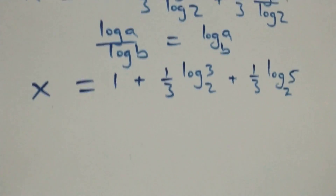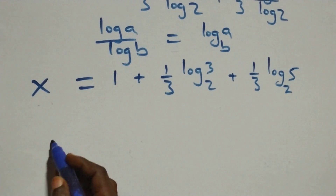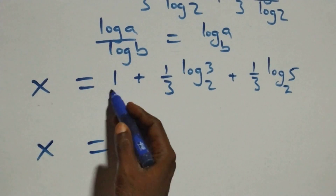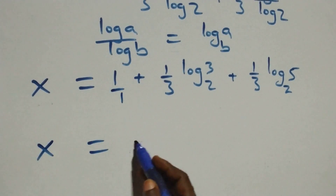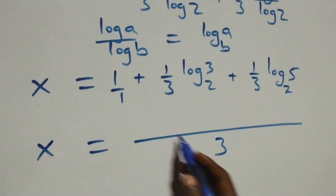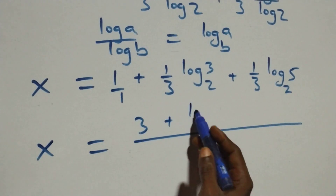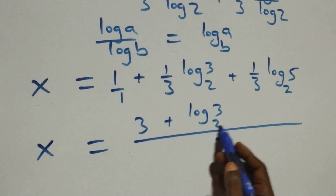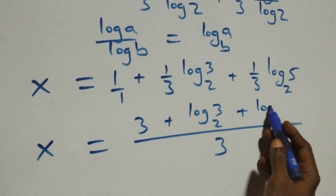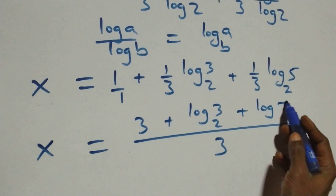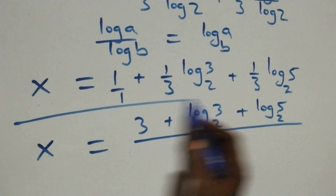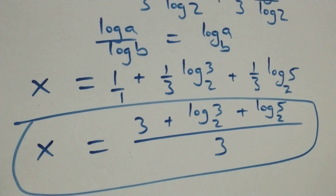Bringing everything together as a single fraction: the 1 becomes 3 over 3, so we have x equals (3 plus log₂3 plus log₂5) all over 3. This is the value of x.